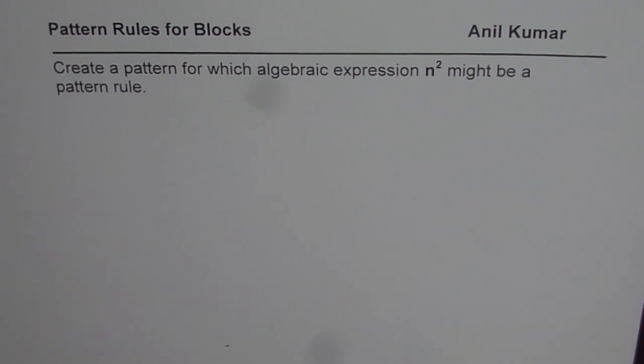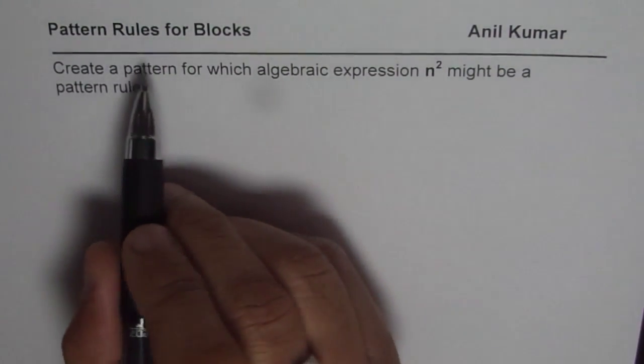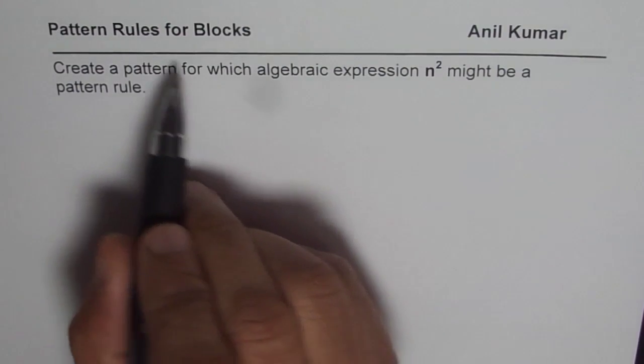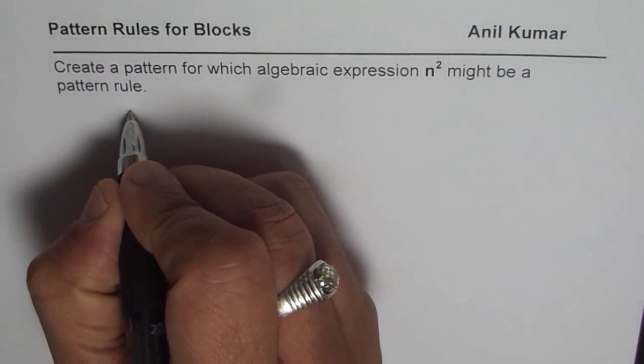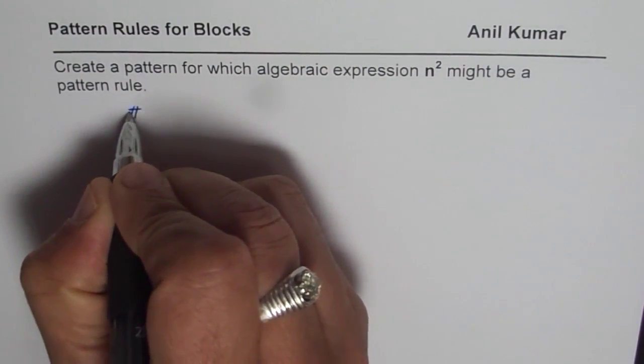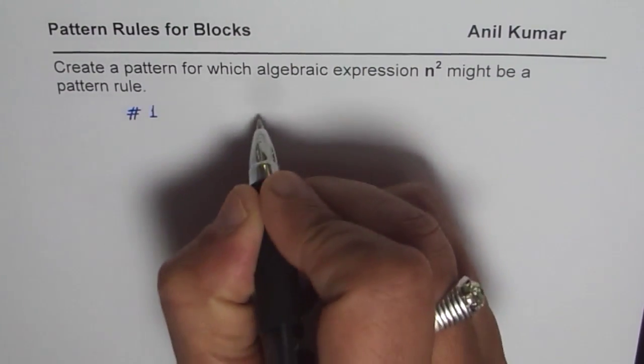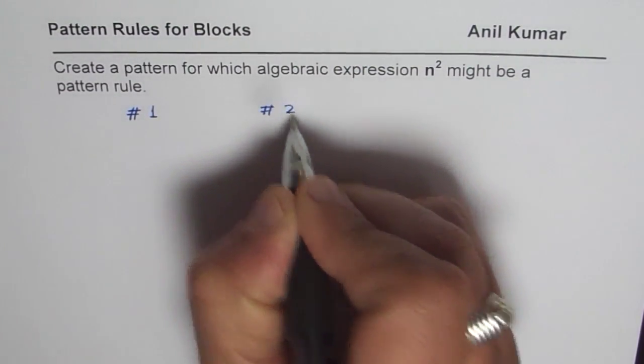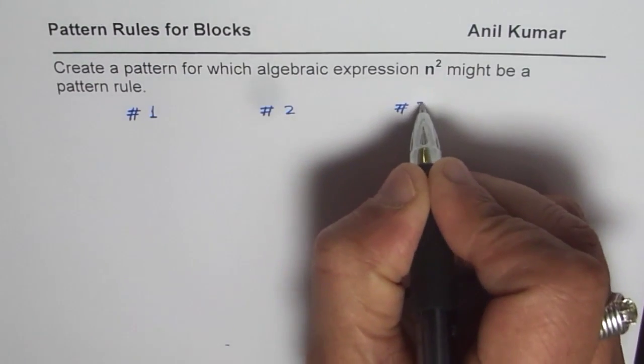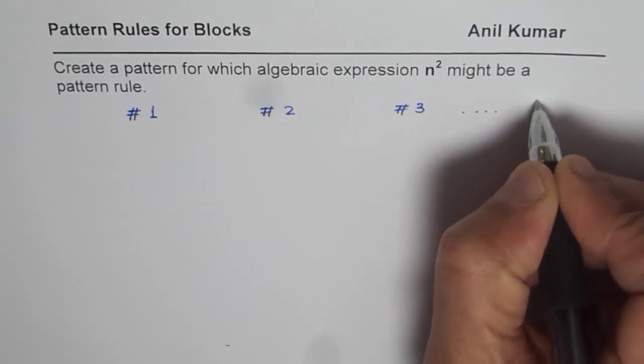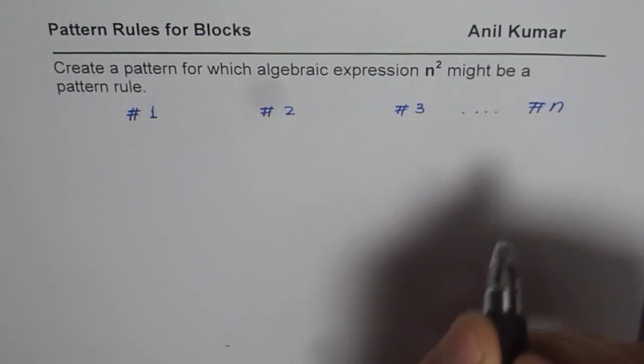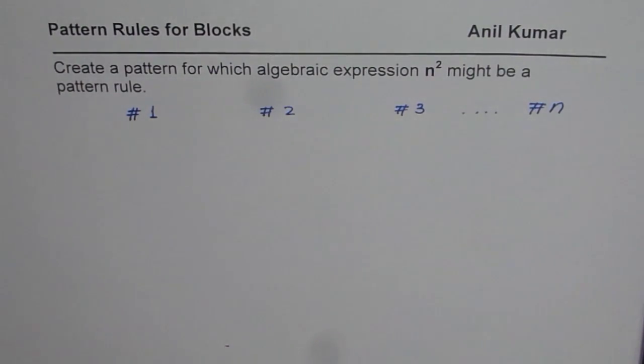Now what does n² mean? So when we are trying to make pattern rules and we are making with the blocks, let me say this is our figure number 1, and then we'll draw figure number 2 here, and then we'll draw figure number 3. And this could be extended to figure number n. So n is any number of figures. That is what n is for us, right?